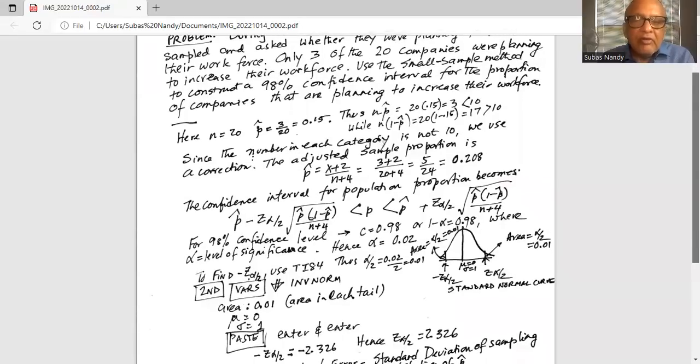Now the level of significance is divided into two equal parts in two tails. So we take 0.02 and divide it into two equal parts: 0.02 divided by 2 is 0.01. So the area of the shaded portion in the left tail and in the right tail both equal 0.01. This is where most probably the population proportion will not fall.